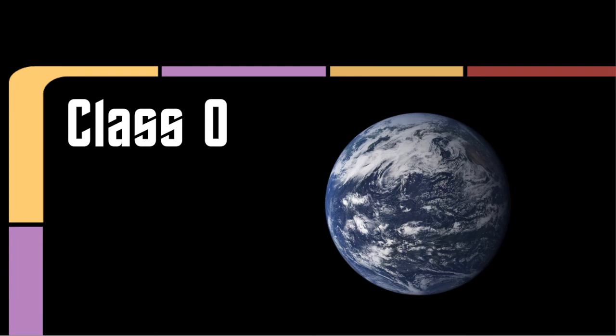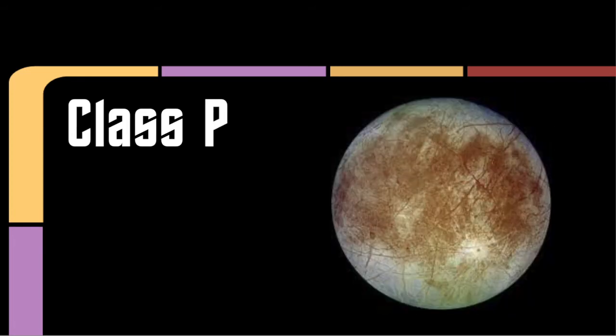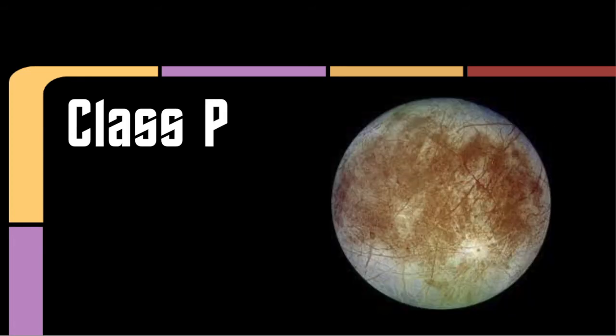Class O worlds are completely or almost completely covered in water, like Laythe from Kerbal Space Program, which could also count as class L. Class P are like class O worlds, but more frozen, think of Jupiter's moon Europa.